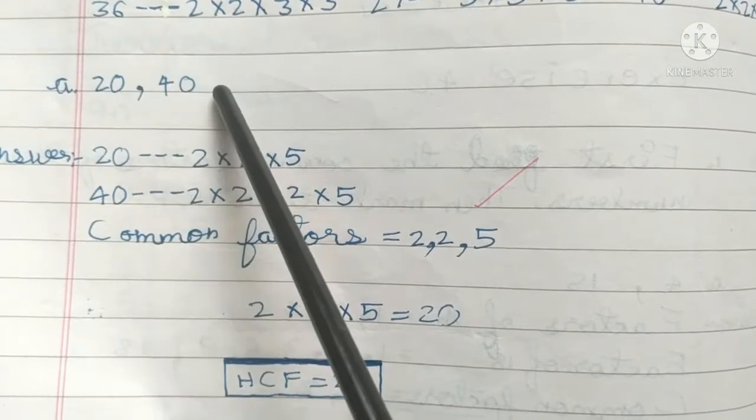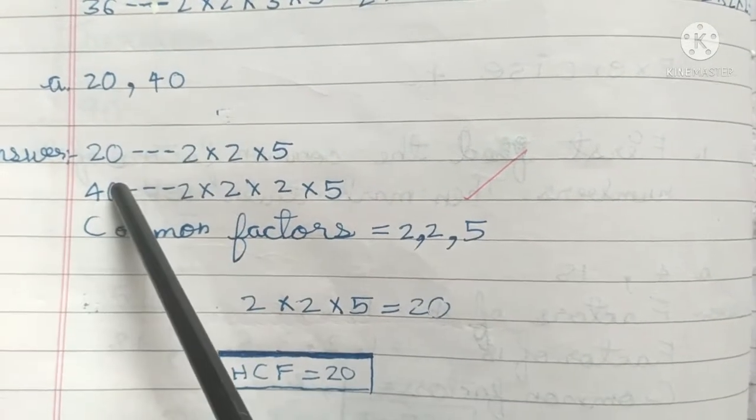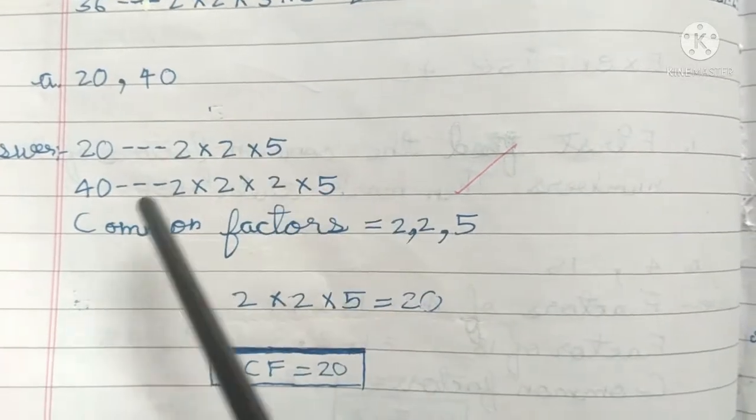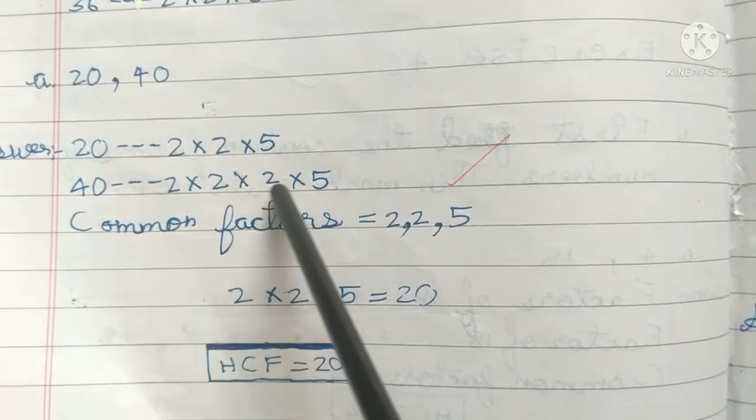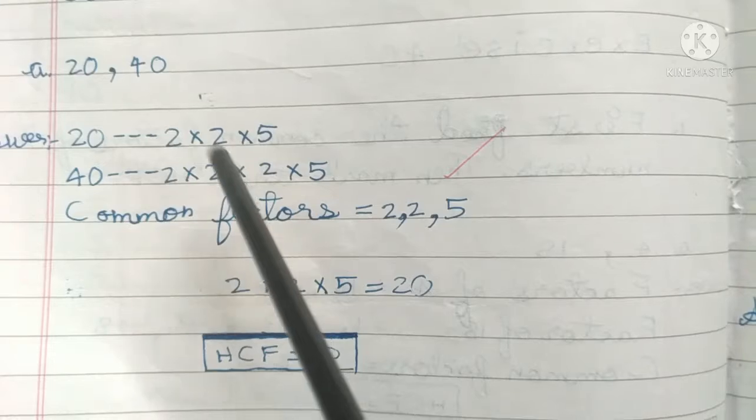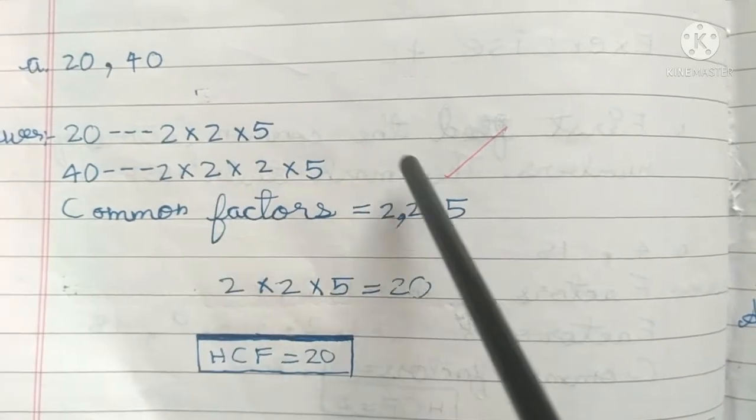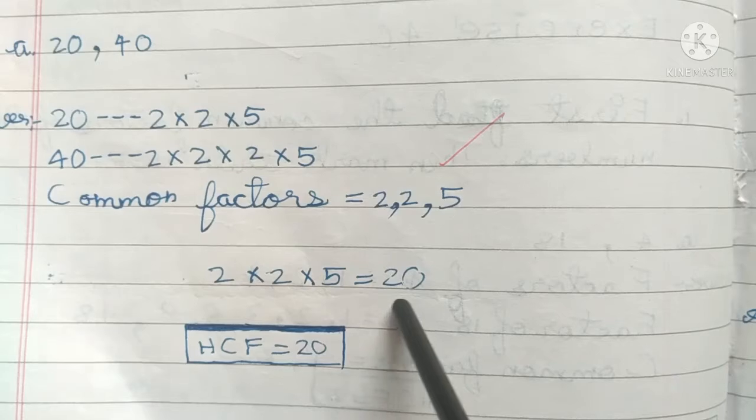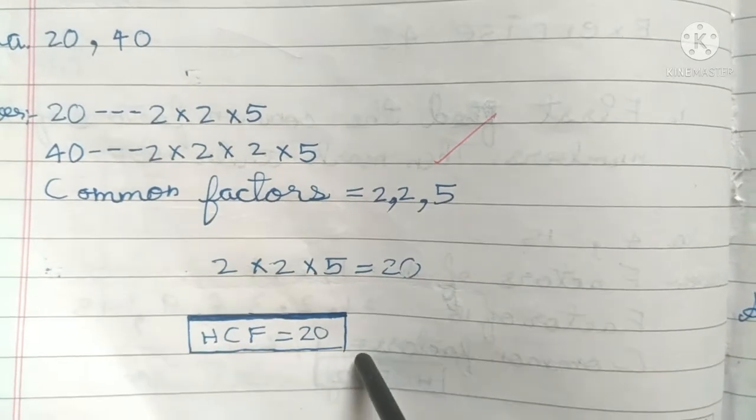First one: 20 and 40. Answer: for 20, it is 2×2×5; for 40, 2×2×2×5. Common factors are 2, 2, 5, that is 2×2×5, which equals 20. HCF is 20.